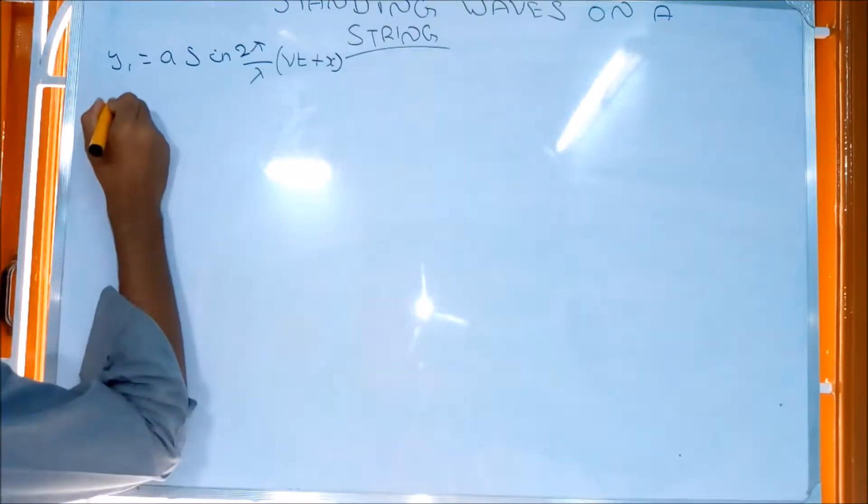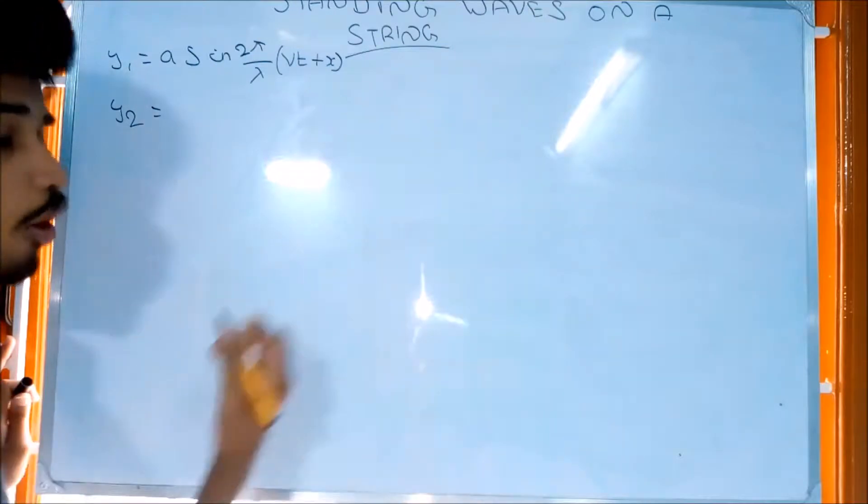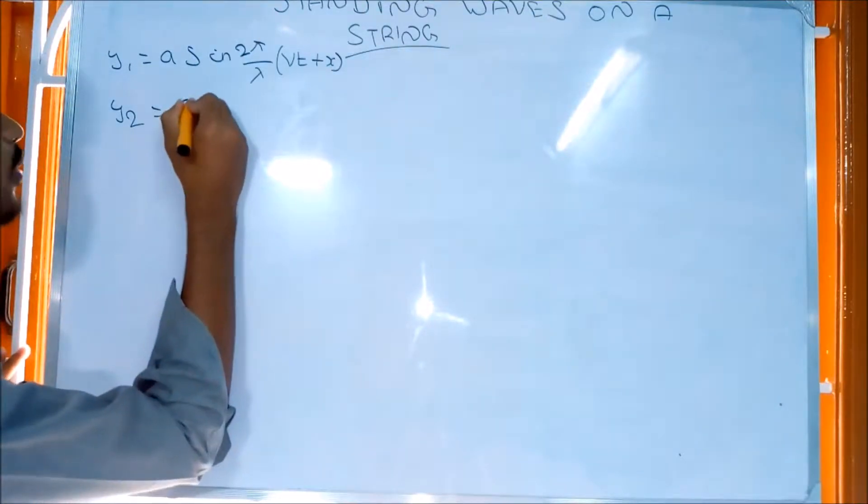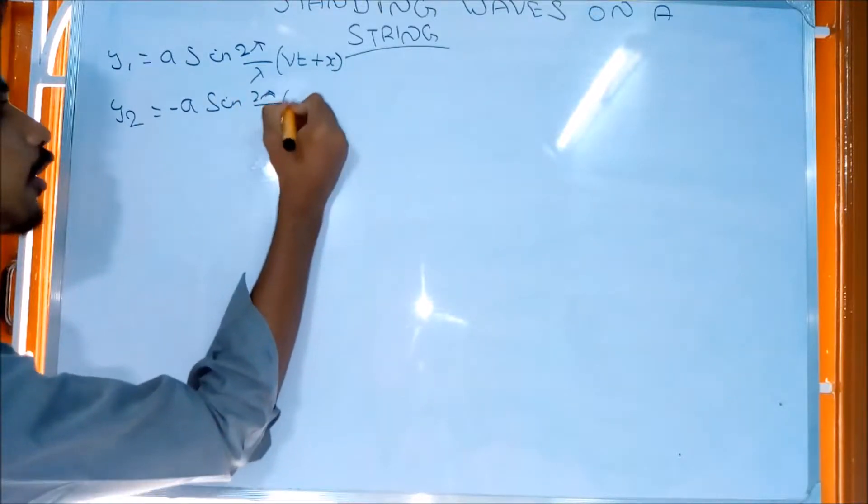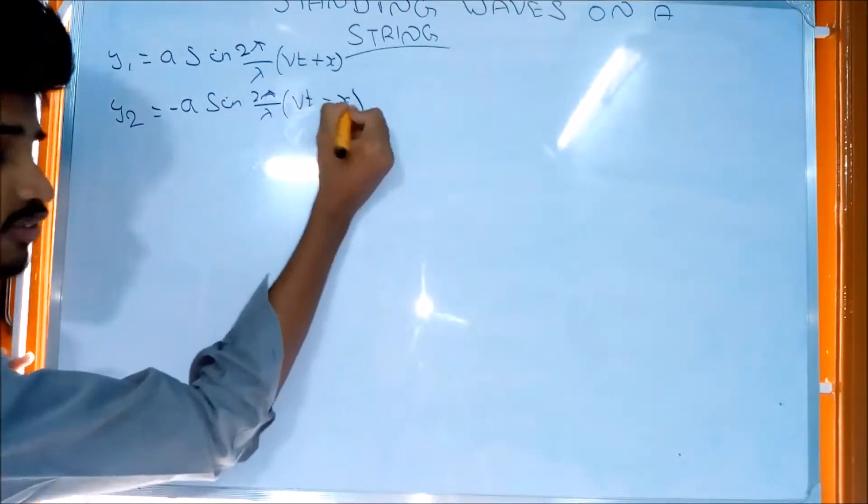For the reflected wave, it travels in the opposite direction, so y2 equals a sin 2π/λ into vt minus x.